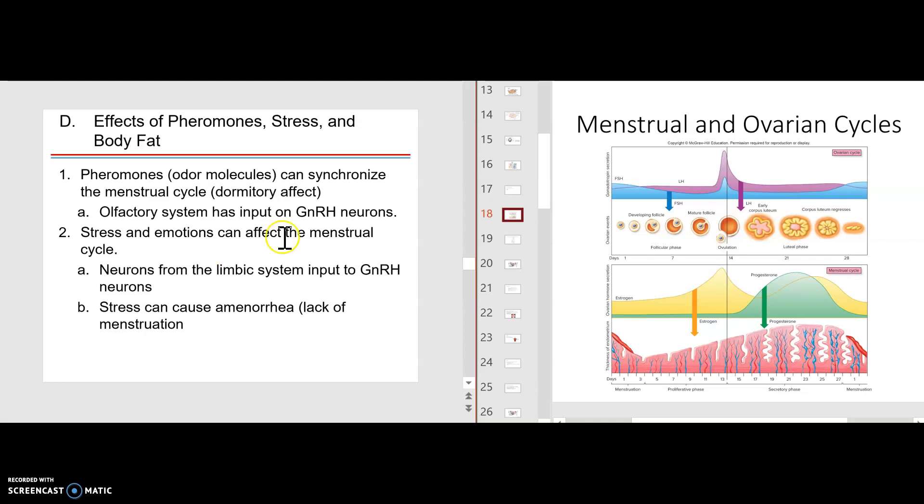Why is that? Neurons in the limbic system—the limbic system in the brain is the pain and pleasure system. Amygdala, hippocampus, other areas that can have input to the gonadotrophin-releasing hormone. Stress can cause amenorrhea, as I mentioned.